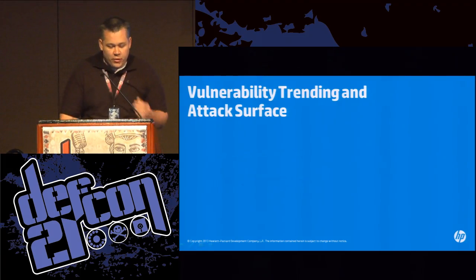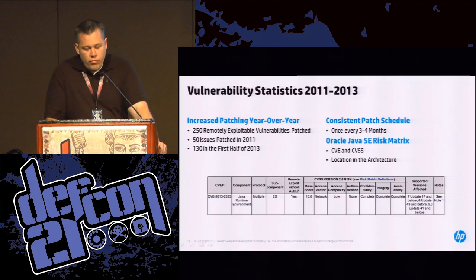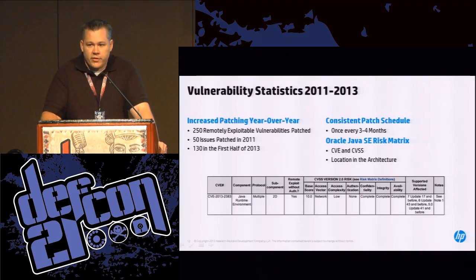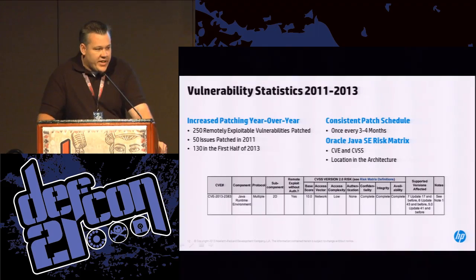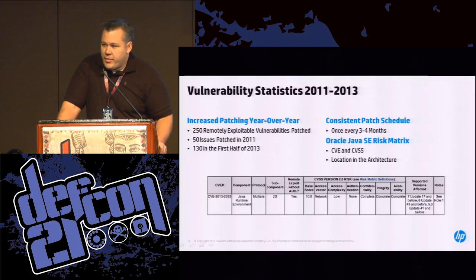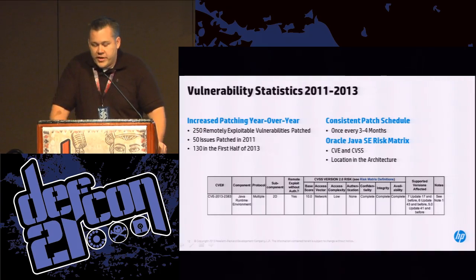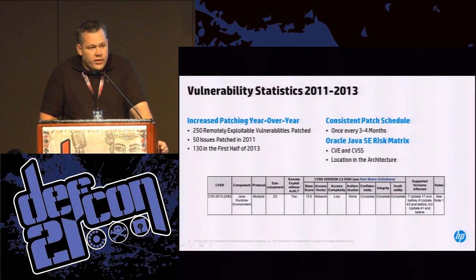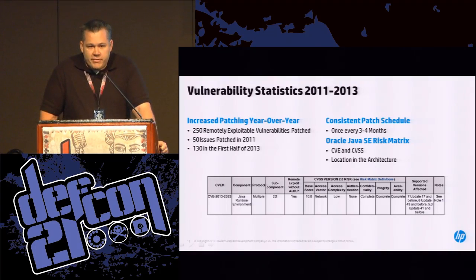What you're seeing here is patch statistics from Oracle's patch releases. They've actually patched year-over-year more vulnerabilities every year, with 50 vulnerabilities being patched that were remotely exploitable in 2011, with over 130 vulnerabilities remotely exploitable in the first half of 2013. So there's been a huge increase in research and patching in that area.